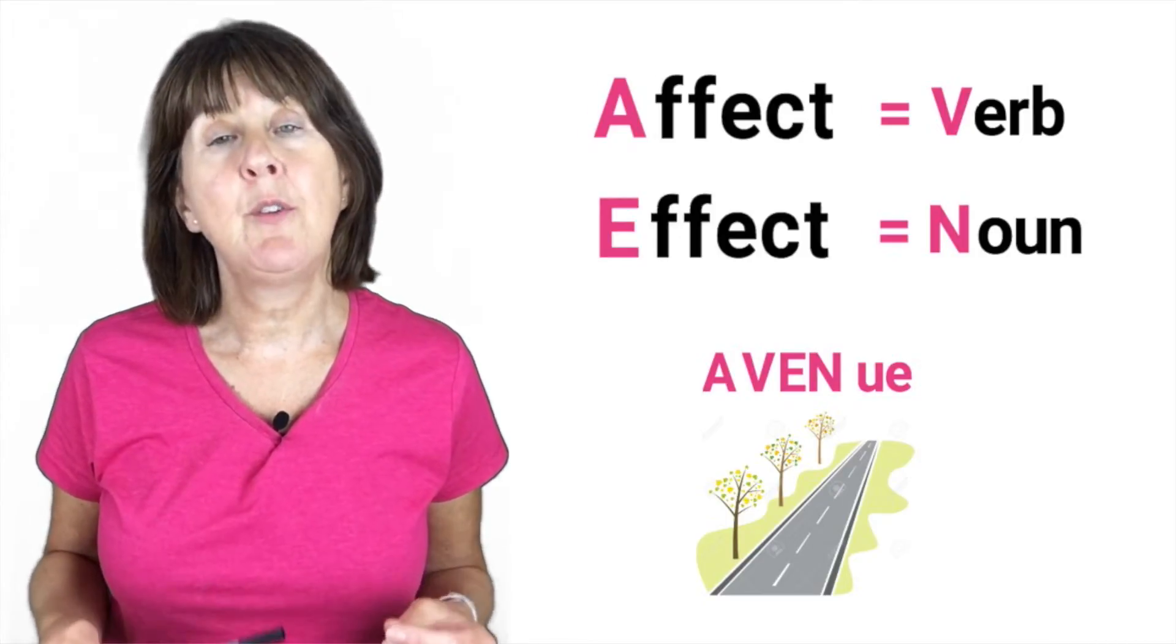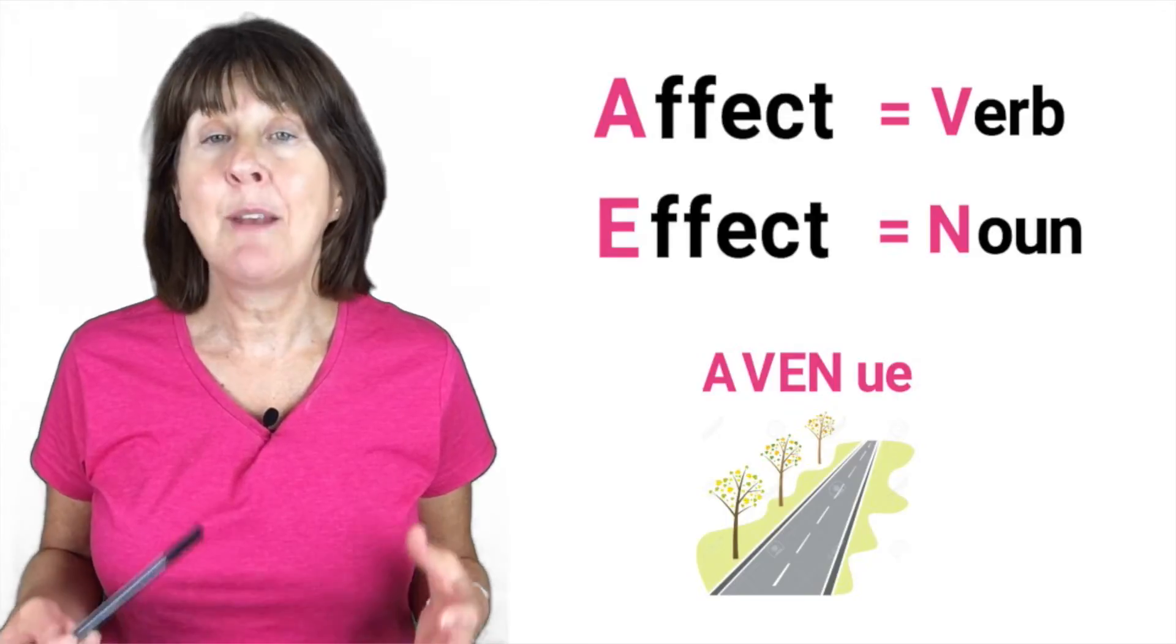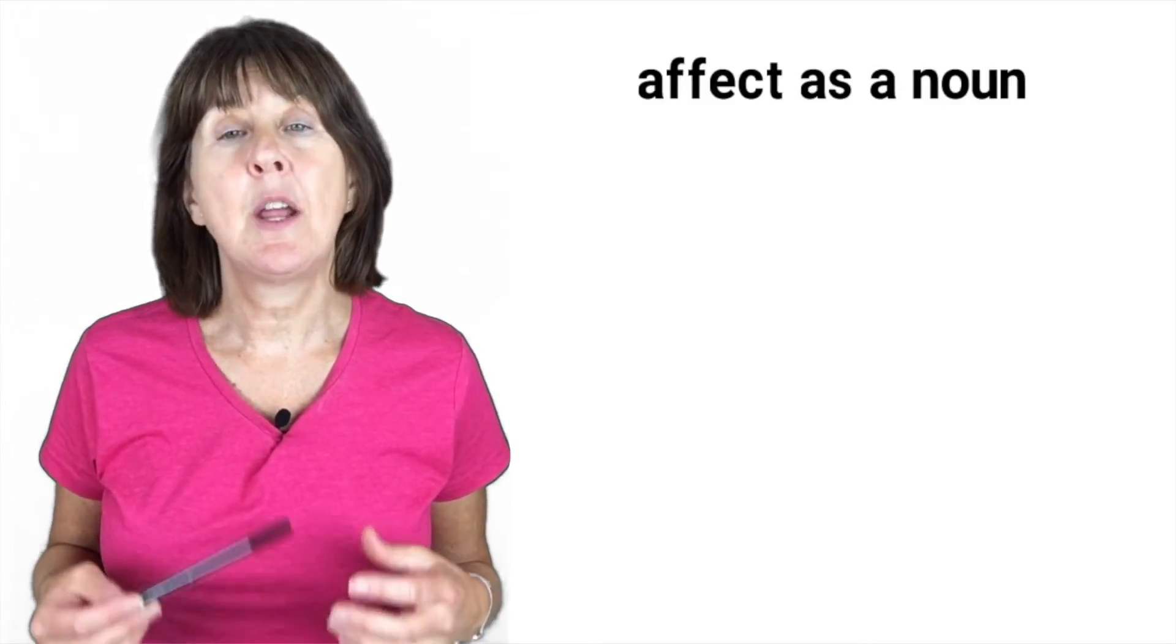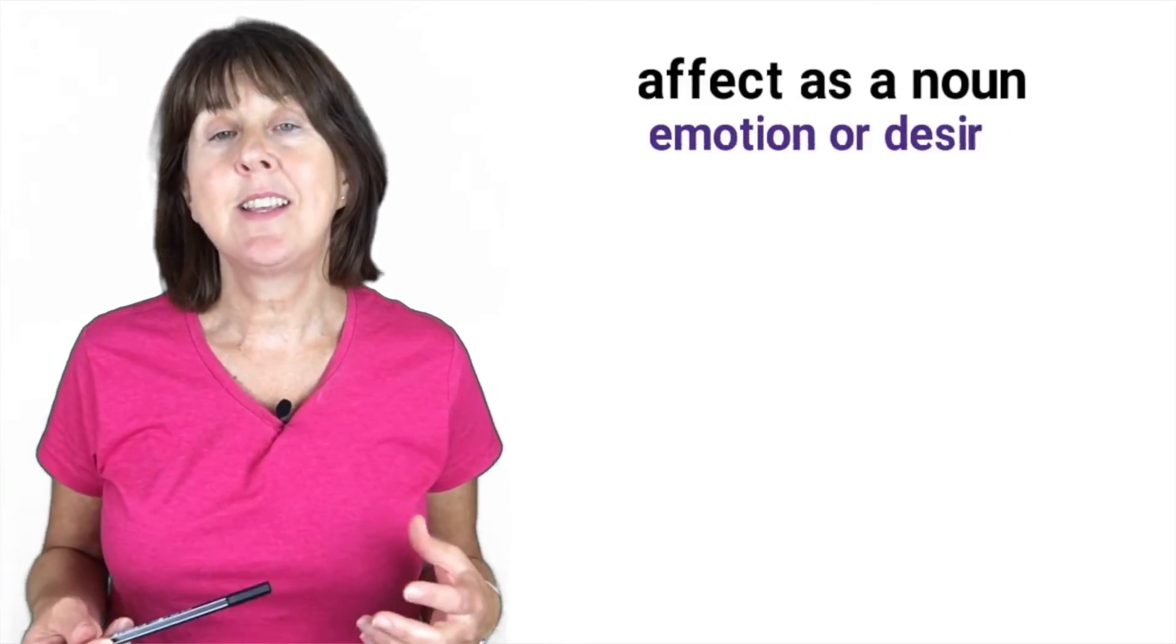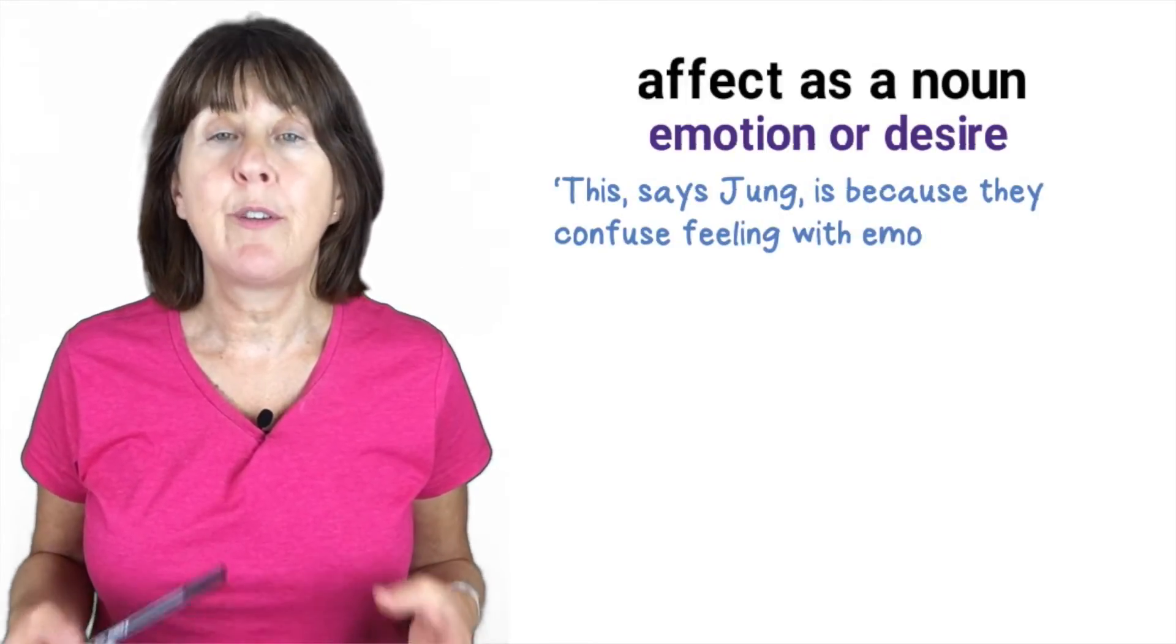But I will give you their meanings now. So affect with an A can be used as a noun but it's purely when talking about psychology and it means either emotion or desire. For example, the Jungian confuses feeling with emotion or affect.